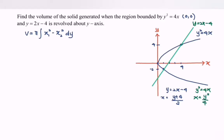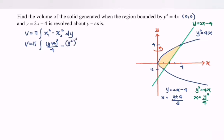By referring to the region bounded by the curves and revolving about the y-axis, we substitute into the volume formula. v equals pi times the integral from negative 2 to 4 of [(y plus 4) over 2] squared minus [y squared over 4] squared with respect to y. This gives pi times the integral from negative 2 to 4 of (y plus 4) squared over 4 minus y to the fourth over 16, with respect to y.